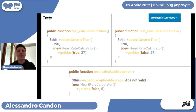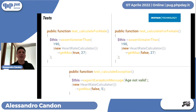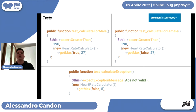Ho scritto tre test molto semplici. Chi è esperto di testing noterà subito che non sono di qualità, ma questa è una scelta voluta — nelle prossime slide capiremo il perché. Il primo testa la frequenza cardiaca massima di un uomo di 27 anni, che deve essere superiore ai 190 battiti. Anche quella di una donna di 27 anni deve essere superiore ai 190. La frequenza di un bambino di 5 anni non può essere calcolata con questo algoritmo.